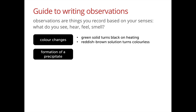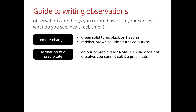That brings us to the second point, which is whether there is a formation of a precipitate. A precipitate is a solid that is formed when you mix two solutions together. Another case is when you bubble carbon dioxide into lime water, you also form a precipitate. If you are trying to dissolve a solid in water and it doesn't dissolve, you cannot call that a precipitate — a precipitate is something that is formed in a chemical reaction. In such instances, we will describe the colour of the precipitate that is formed.